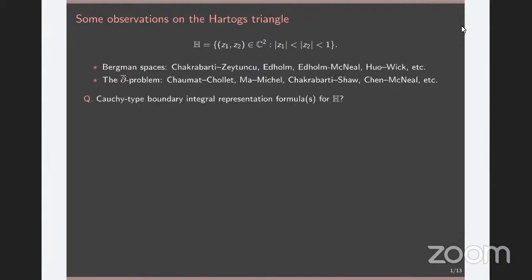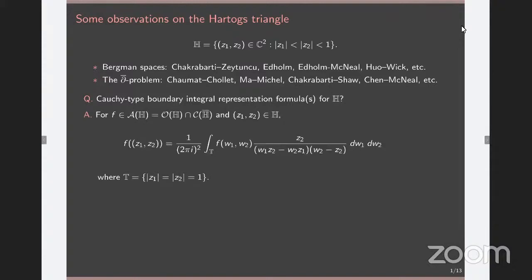It turns out that if you do what one does on the bi-disc, it is not actually difficult to come up with a Cauchy integral representation formula on the Hartogs triangle. This formula is valid for functions that are holomorphic on the Hartogs triangle and continuous all the way up to the full boundary. I will refer to that class of functions as the triangle algebra. The integration takes place over what is sometimes referred to as the distinguished boundary of the Hartogs triangle, which is a two-dimensional torus. When there is a boundary integral representation formula like this, there is usually some sort of a Hardy space lurking around.